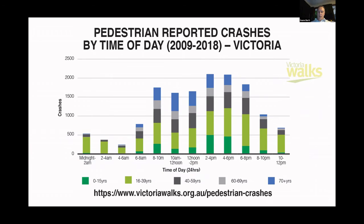Because we did such a comprehensive study looking at many crashes over a 10-year period, we were able to report at quite a fine level of detail. The data details the time of day that people are hit and the age group of those people. In the early hours of the morning, it tends to be young adults who are injured — probably after going out at night and being injured on the way home. Older people tend to be hit during the day, particularly in the morning, and are definitely overrepresented in pedestrian crashes, injuries and fatalities.